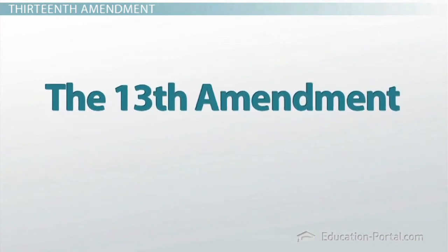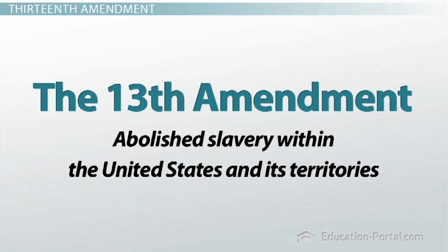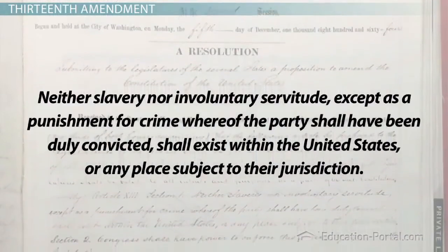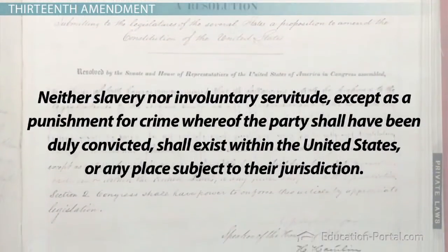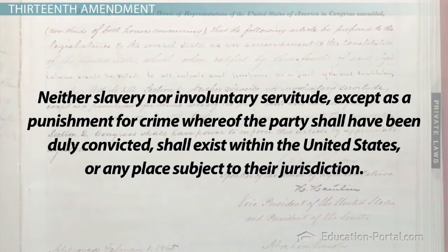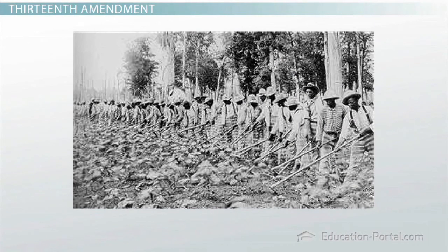On December 6, 1865, the Thirteenth Amendment abolished slavery within the United States and its territories. It reads: "Neither slavery nor involuntary servitude, except as a punishment for crime whereof the party shall have been duly convicted, shall exist within the United States or any place subject to their jurisdiction." The exception that allows servitude as punishment for crime allows prisons to use inmate labor.